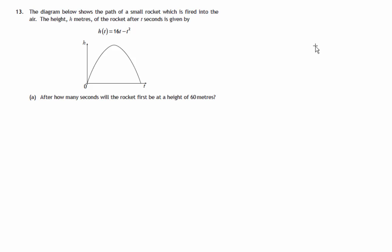This is question 13 from paper 1 of the 2014 National 5 Maths exam. A rocket is fired into the air and we're given a graph showing its height after a certain time has elapsed. So it's fired here at height zero, then it reaches a maximum height, and then it falls back down to height zero again at some time t.